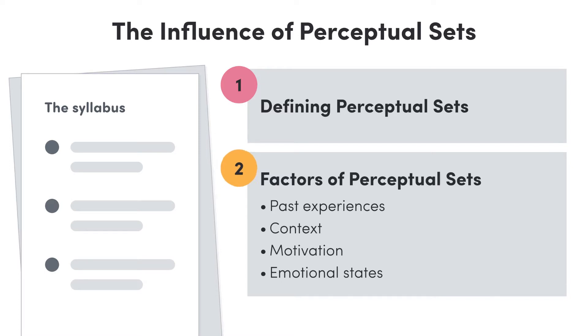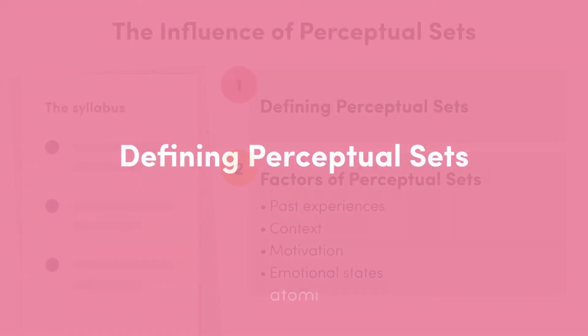Next, we'll explain how they influence our interpretation of visual information through a range of factors including past experiences, context, motivation and emotional states. So let's get started!